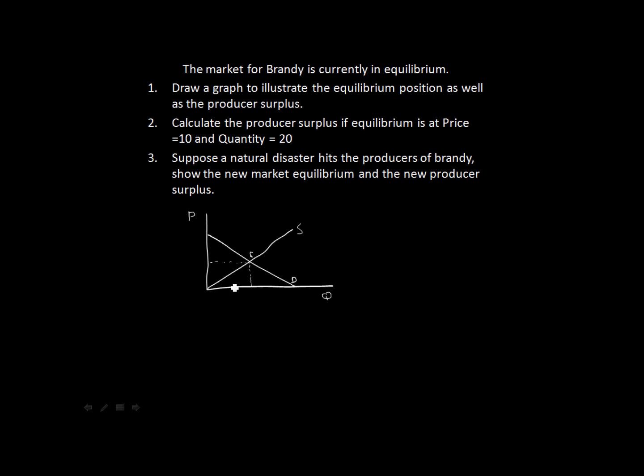And now we need to illustrate where our producer surplus is. Now the easiest way to remember where producer surplus is, it is the area above the supply curve but below our equilibrium price.